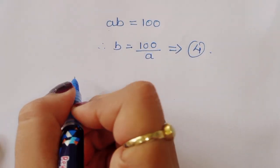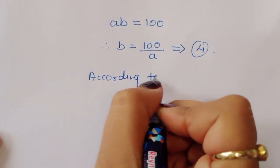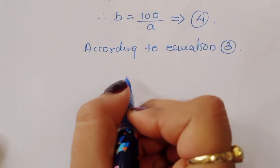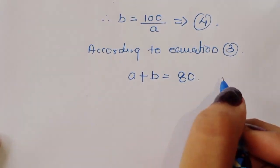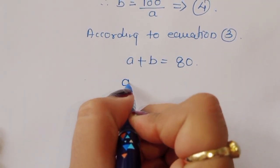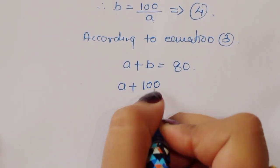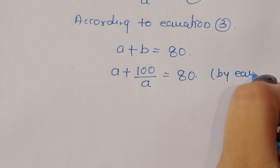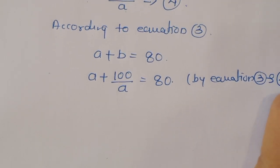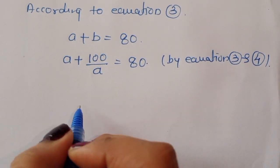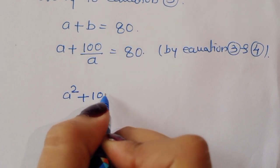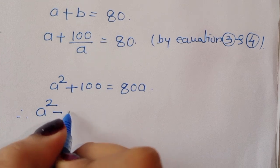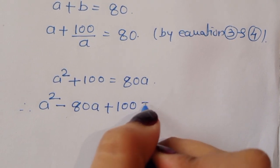According to equation 3, a + b = 80. Substituting b = 100/a from equation 4, we get a + 100/a = 80. Taking the LCM, a² + 100 = 80a, and rearranging gives a² − 80a + 100 = 0.